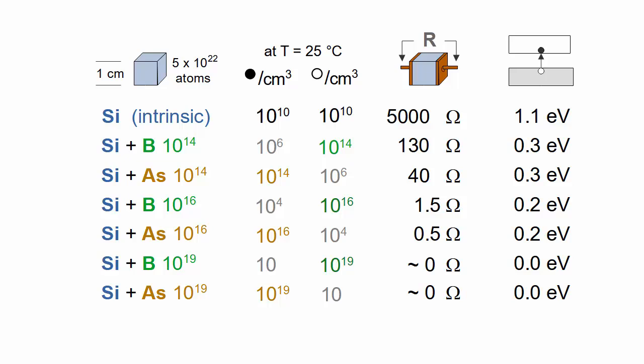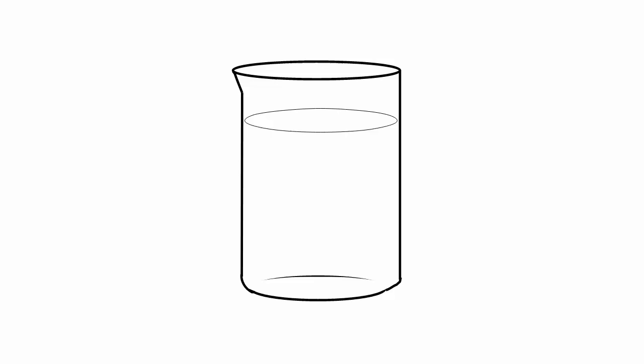Silicon doping is like acid-base chemistry in many ways. In water at room temperature, thermal energy breaks a water molecule into H-plus and OH-minus ions, which are then free to move around at random.